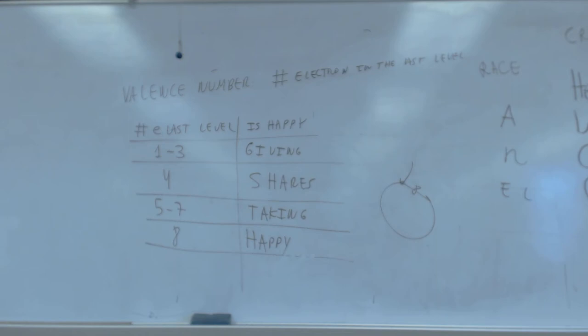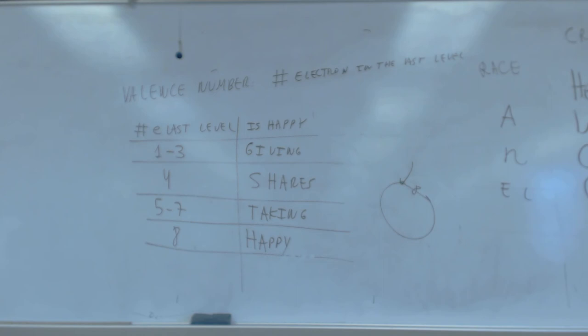Do you see page 84? The first column is the number of electrons in the last level. The next three columns: if it's one, two, or three — it tends to lose them; if it's five, six, or seven — it can take one, two, or three to have eight; if it is four — share electrons; and if it is full — it's happy. Depending on the number of electrons on the last level, you pick one of the four columns on the right. Do you see how to do it? Come on, do it.